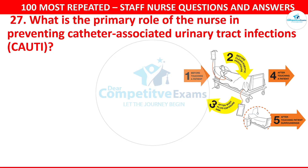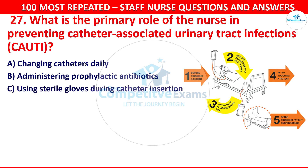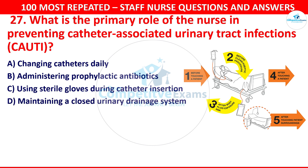What is the primary role of the nurse in preventing catheter-associated urinary tract infection? Your options are: changing catheters daily, administering prophylactic antibiotics, using sterile gloves during catheter insertion, or maintaining a closed urinary drainage system.